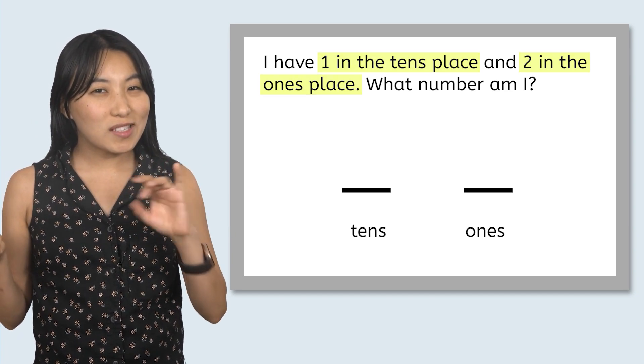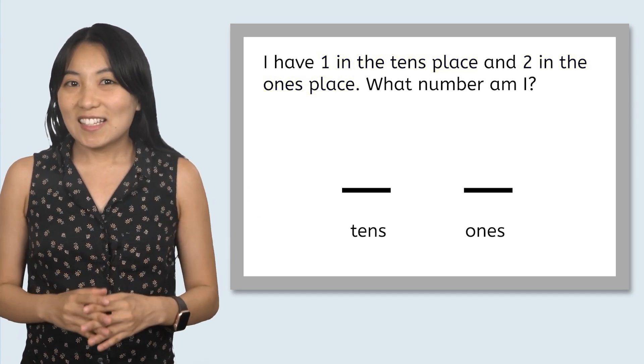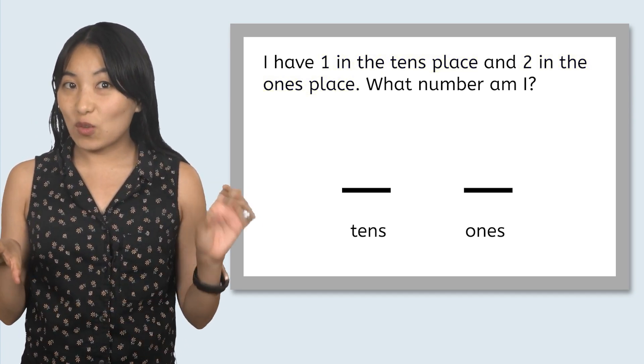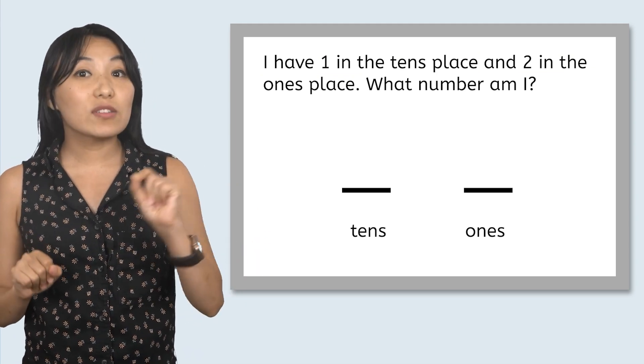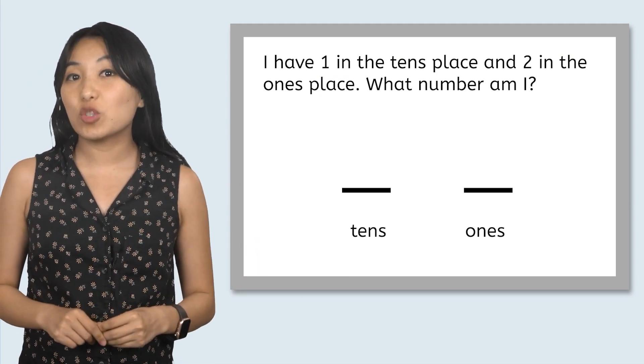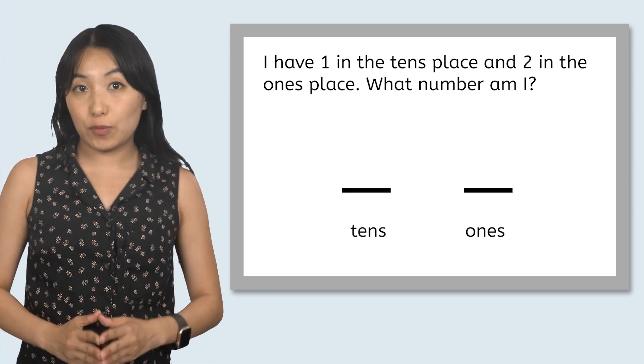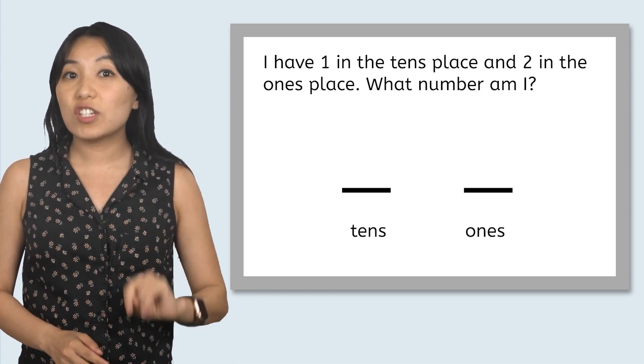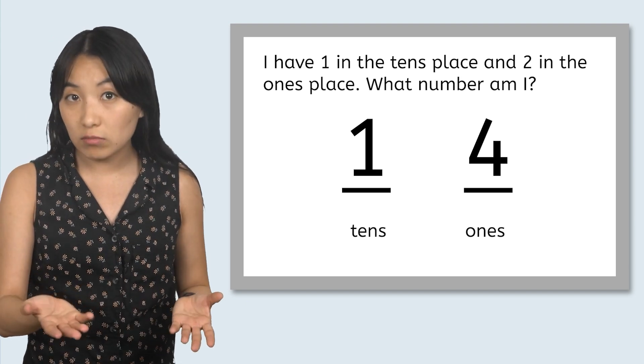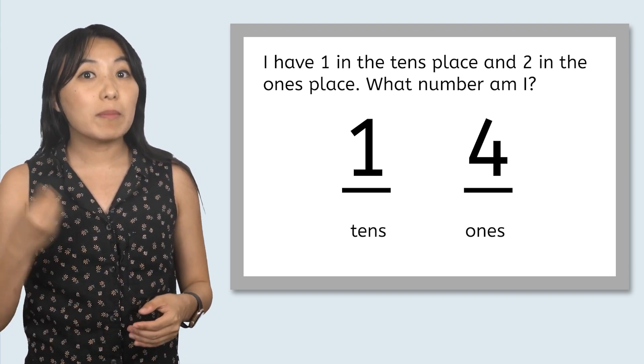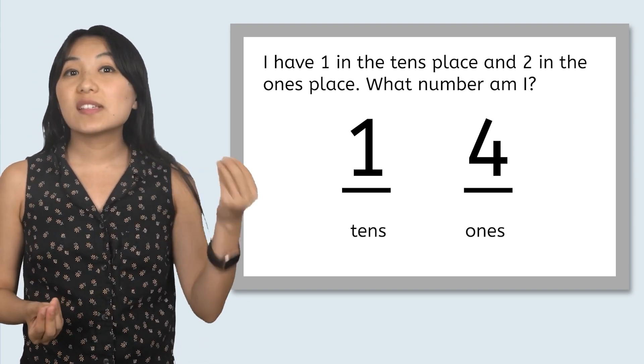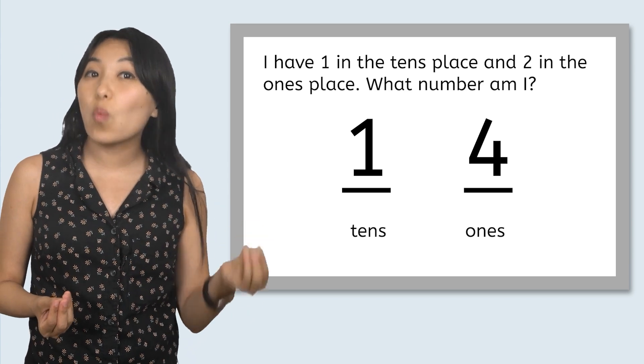This one's a little different. Instead of telling us how many tens and ones it has, it tells us the numerals it has in each place. Numbers have something called place value. That means that in a two-digit number like fourteen, the first place tells you how many tens there are and the second place tells you how many ones there are.